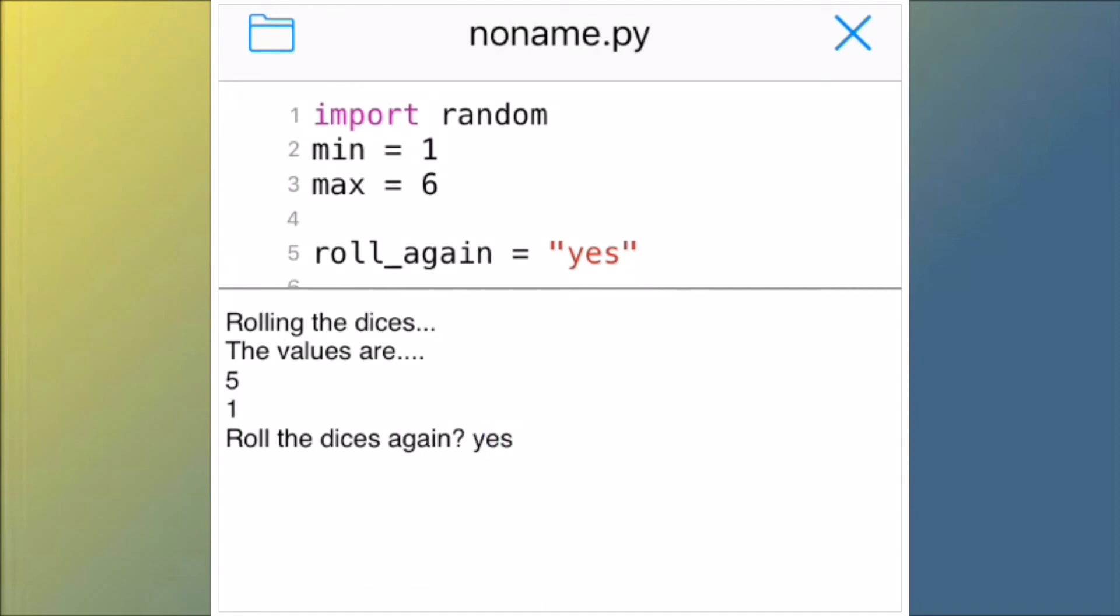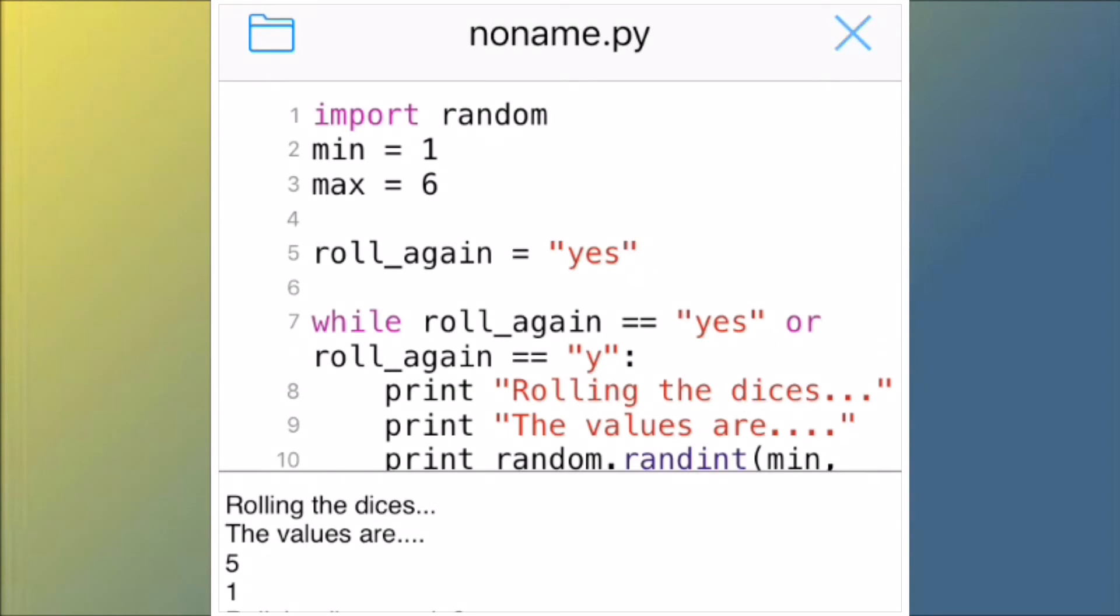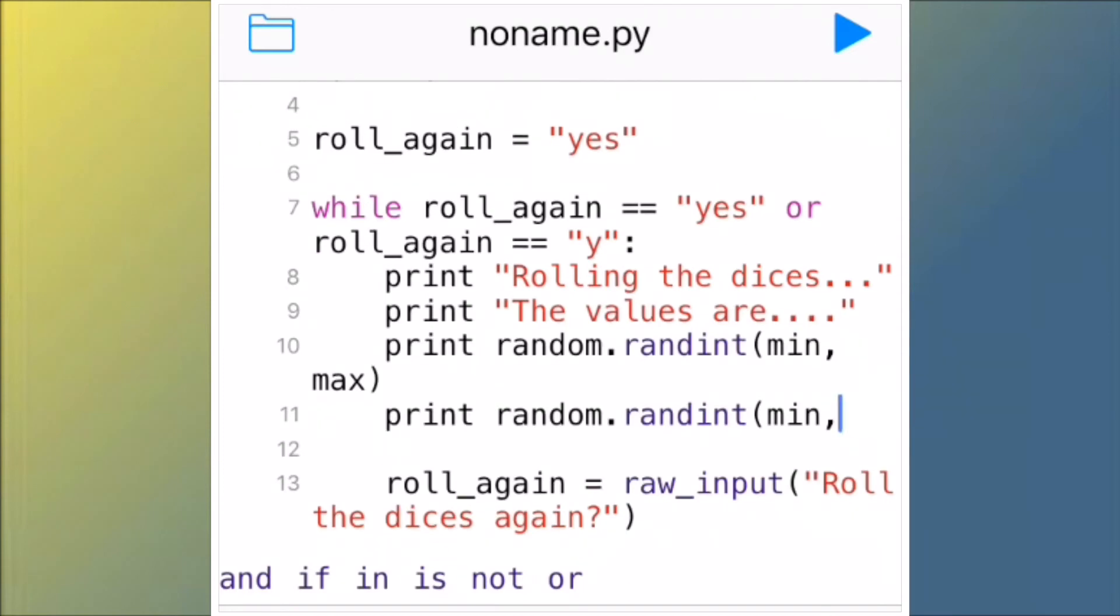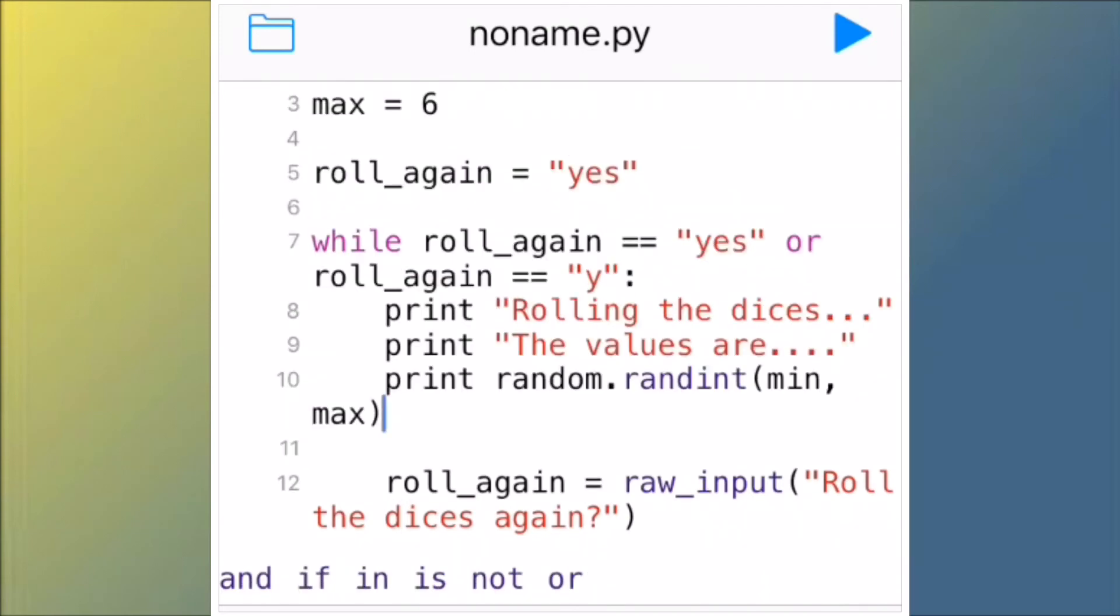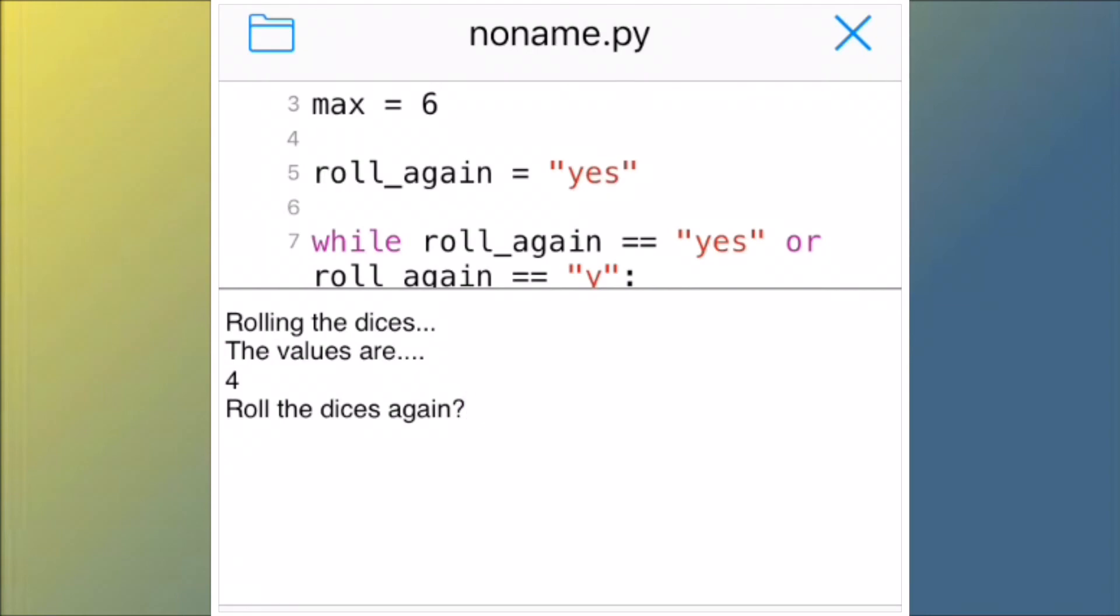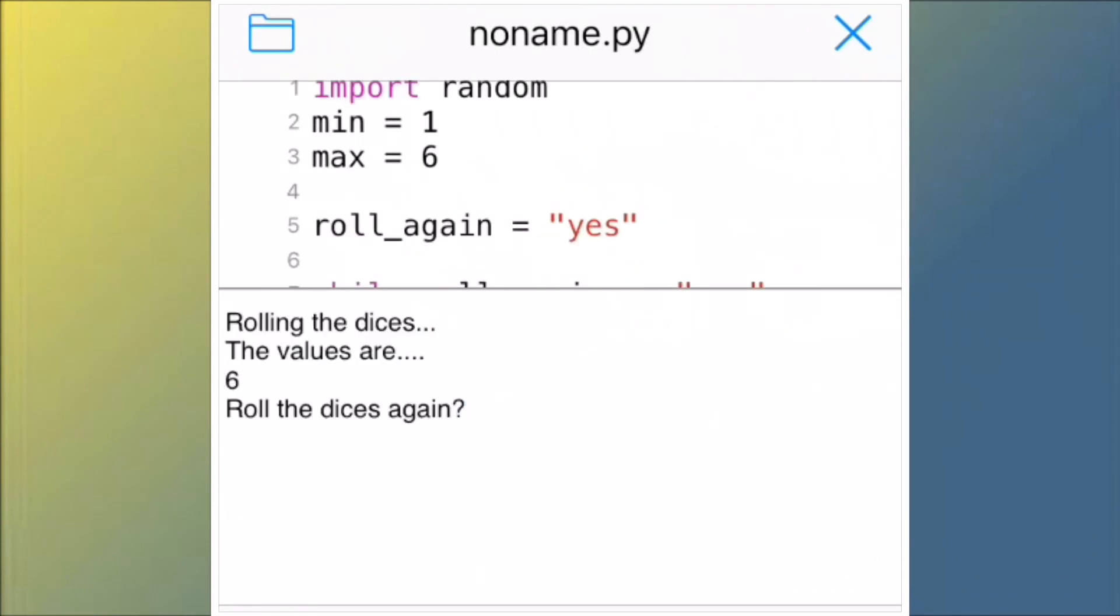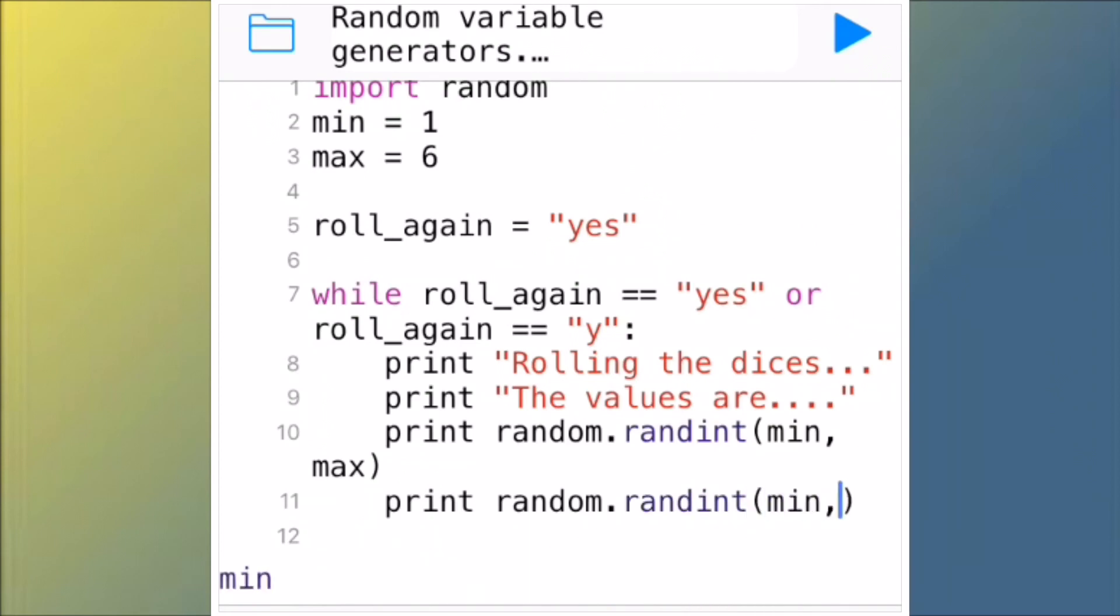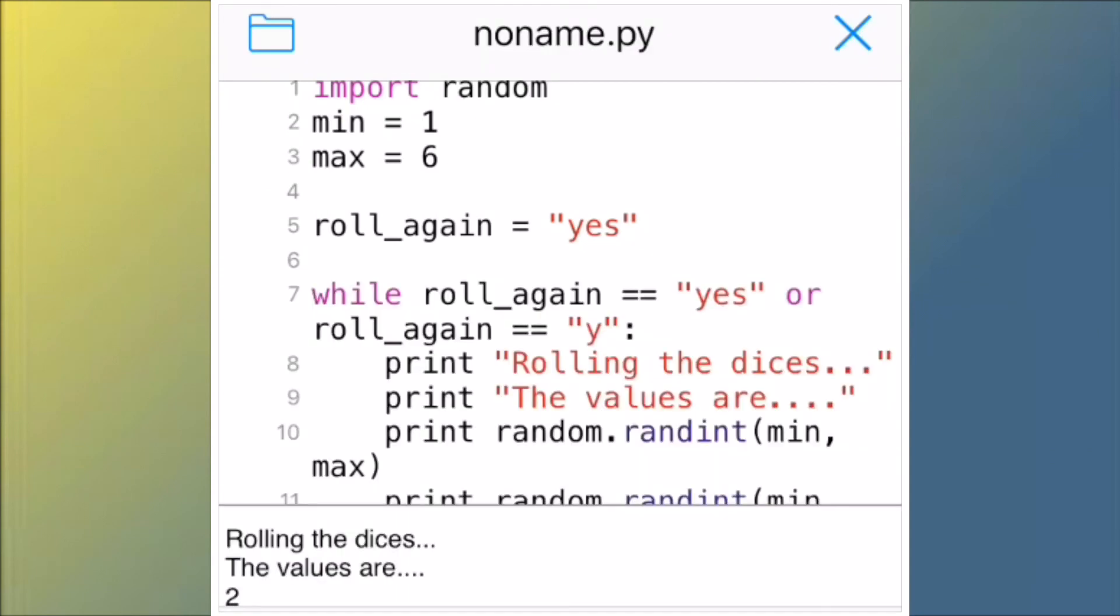Now the way to get it to have only one number is to take away this last print here. Just take away one of the double spaces there, and you have 12 lines. Then we can roll it and as you can see we only have four. It says rolling the dice, the values are four. You can just print random dot randint open bracket min comma max to get two dices again.